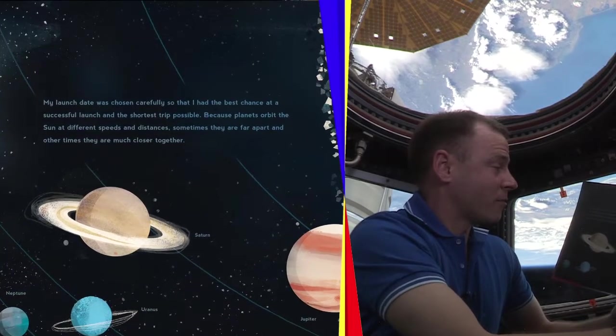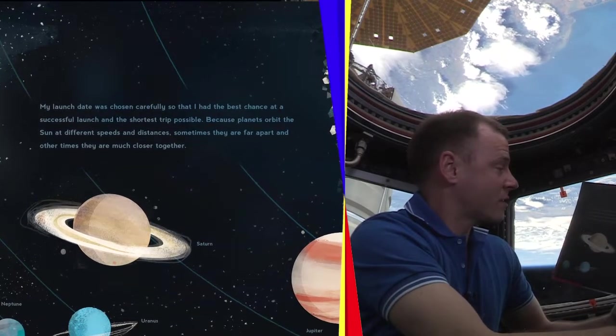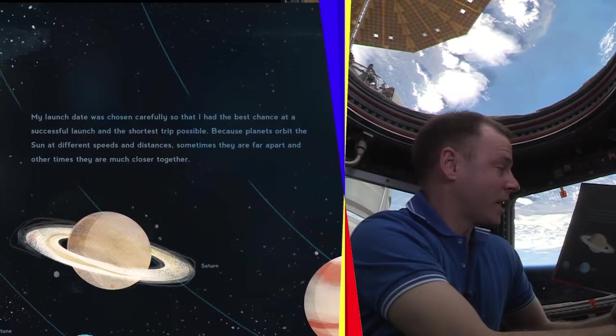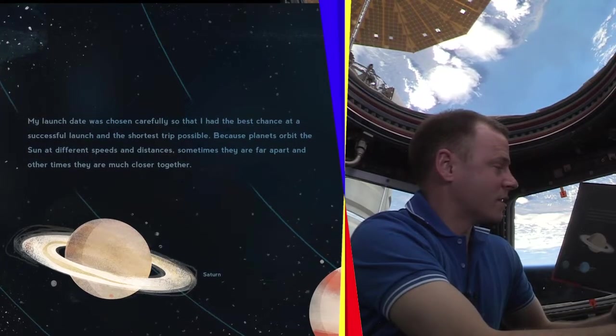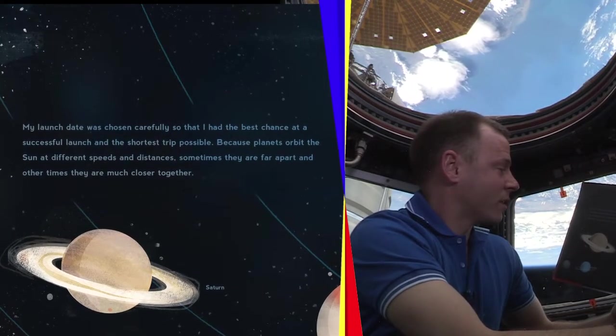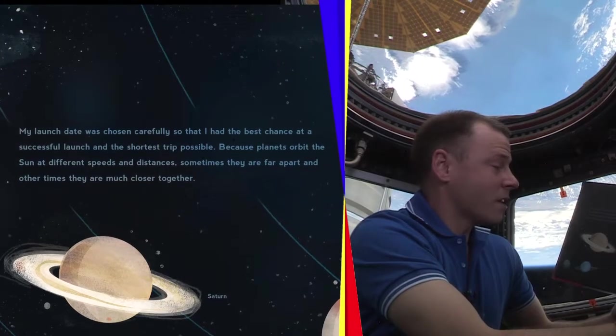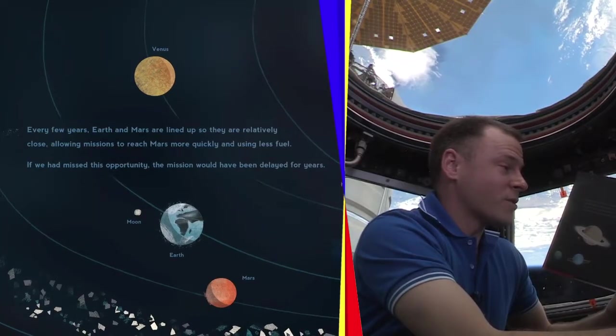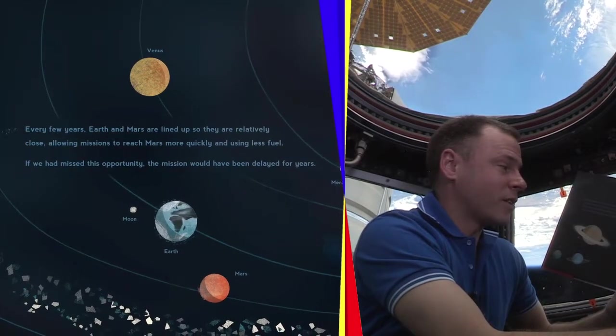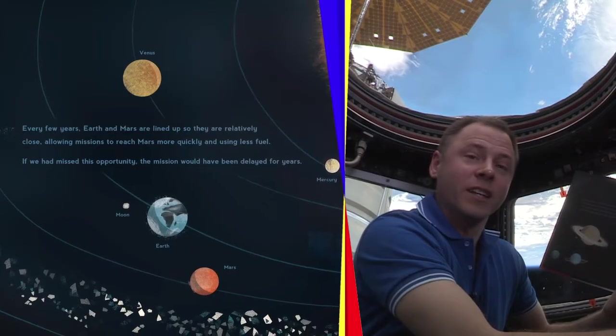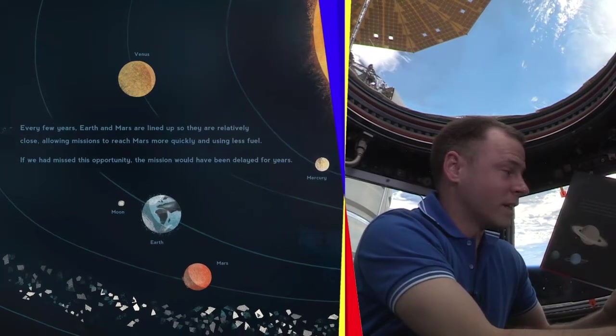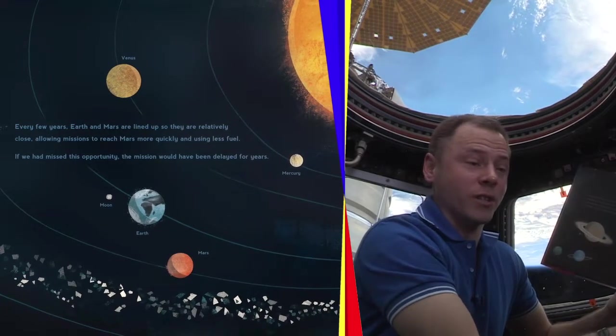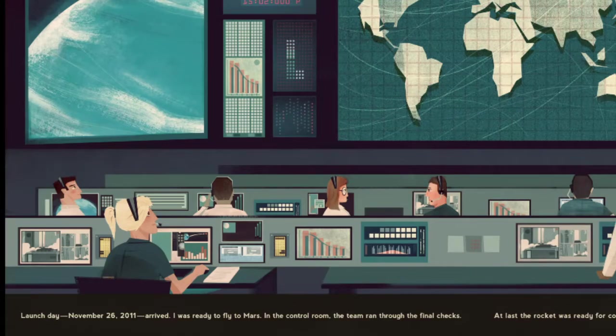My launch date was chosen carefully so that I had the best chance at a successful launch and the shortest trip possible. Because planets orbit the sun at different speeds and distances, sometimes they are far apart, and other times they are much closer. Every few years, Earth and Mars are lined up so that they are relatively close, allowing missions to reach Mars more quickly and using less fuel. If we had missed this opportunity, the mission would have been delayed for years.